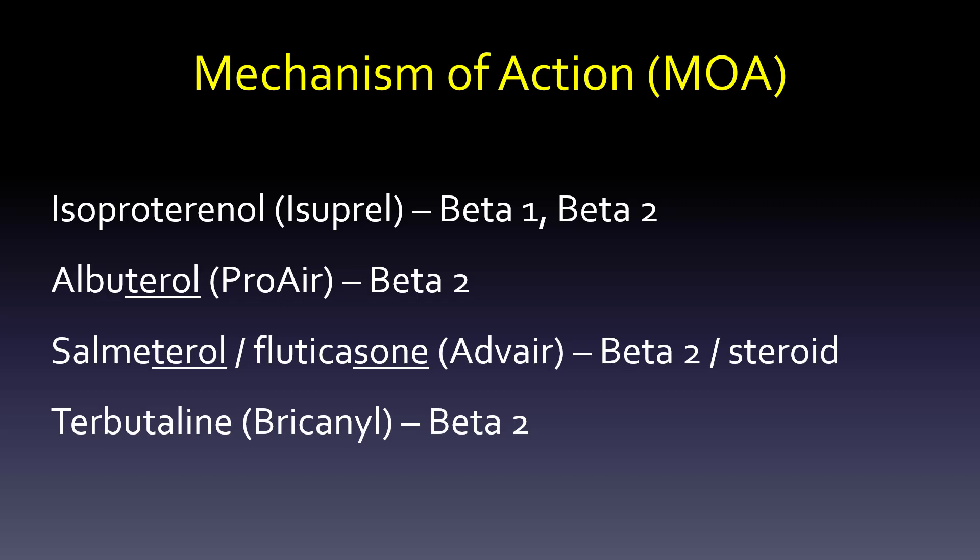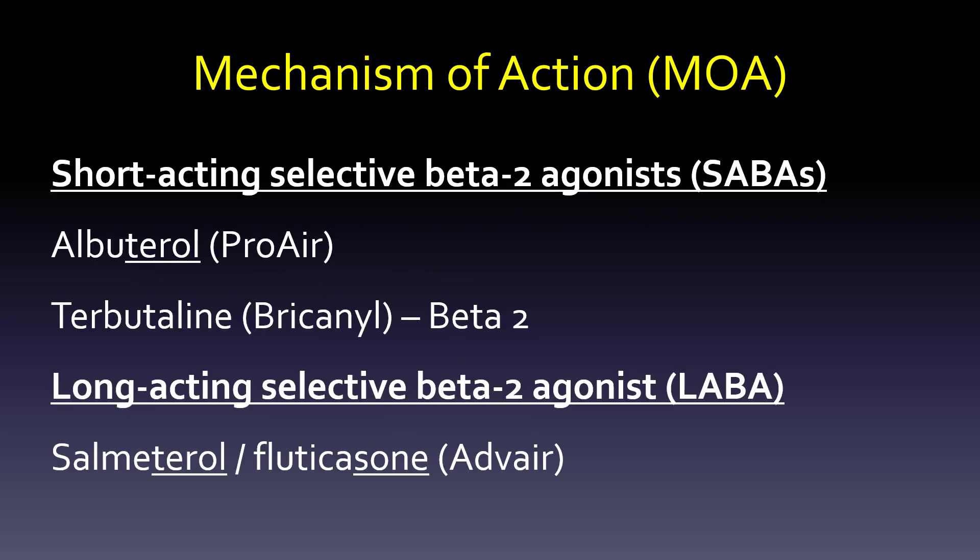Many patients cannot afford Advair or don't take their controller inhaler regularly, so they need more and more albuterol. They keep complaining of jitteriness and tremors — that's from using albuterol wrong, trying to use it as a controller inhaler rather than a rescue inhaler. Salmeterol with fluticasone is Advair — a long-acting beta-2 agonist plus steroid. Terbutaline is also beta-2. Short-acting selective beta-2 agonist is a SABA — that's albuterol and terbutaline. Long-acting selective beta-2 agonist is a LABA — that's salmeterol, not the fluticasone.